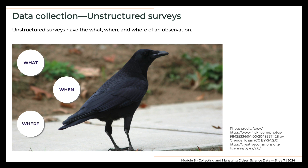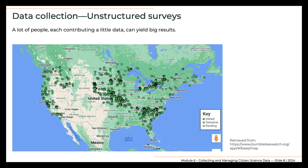Was the crow the only one seen that day? Was it solitary or part of a large flock? Might more crows have been seen had the observer looked more carefully? Unstructured surveys can have significant value, however. For example, they can be used to build distribution maps, to document the spread of invasive species, or to alert researchers to the presence of organisms in an area that they might want to study more deeply.